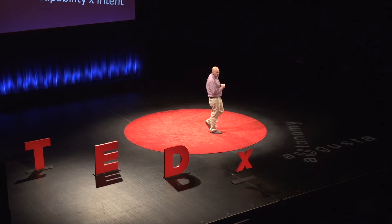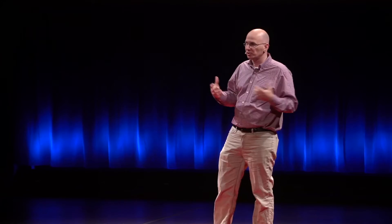When we talk about threat, we use the second formula: our threat is equal to a capability — the threat's capability of impacting our vulnerability — multiplied by their intention to take advantage of our vulnerabilities. When we come to a busy intersection and want to cross the street, we all know that cars are capable of impacting our vulnerability to damage. A motor vehicle running over me would not be a pleasant day. So why aren't we afraid to cross the street?